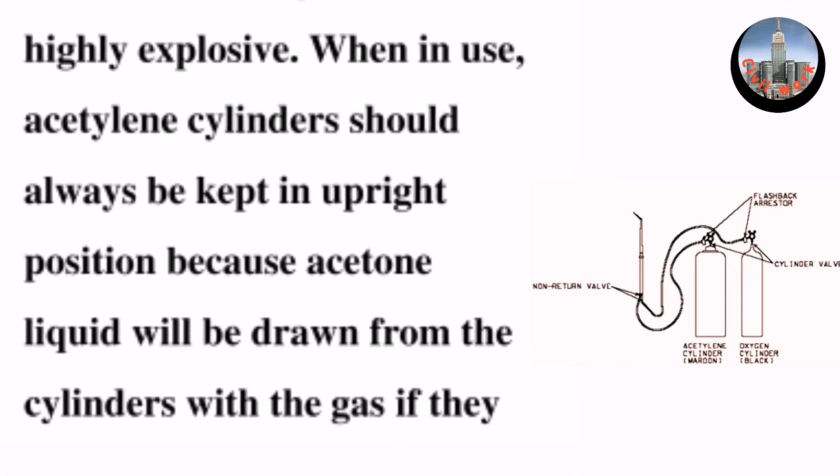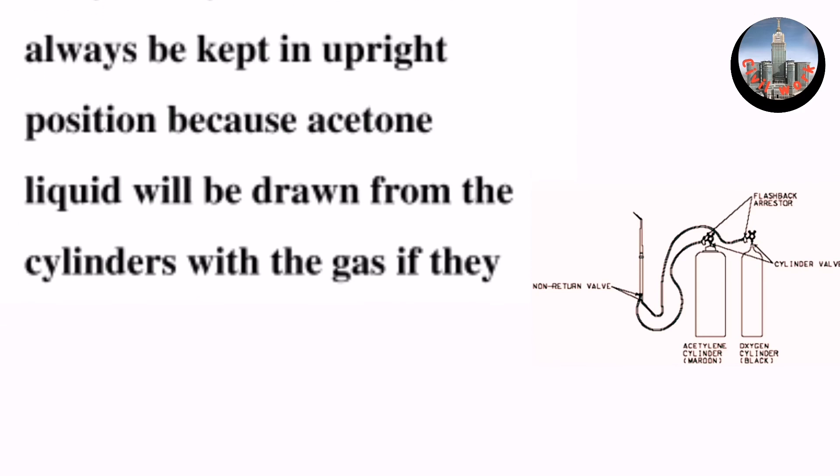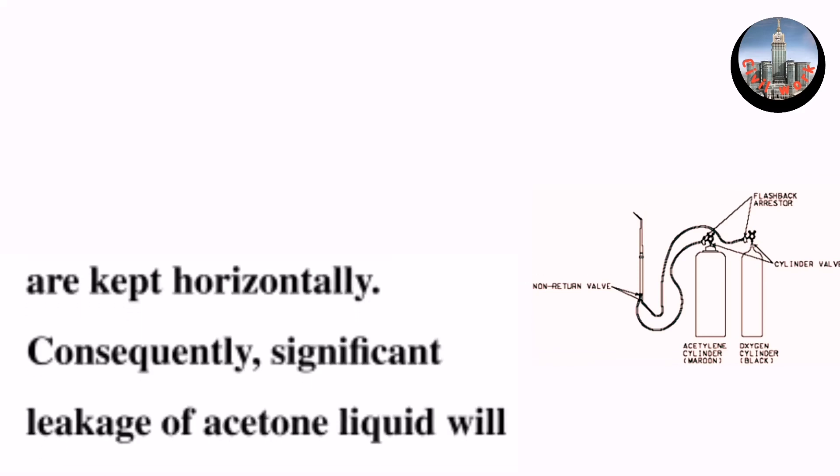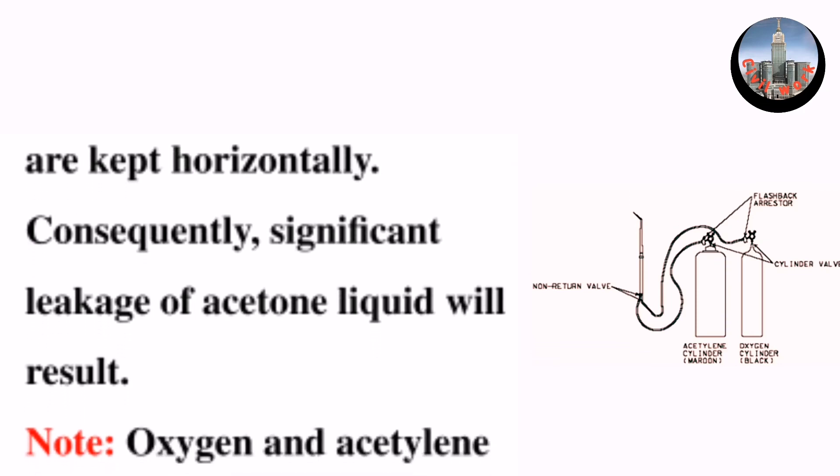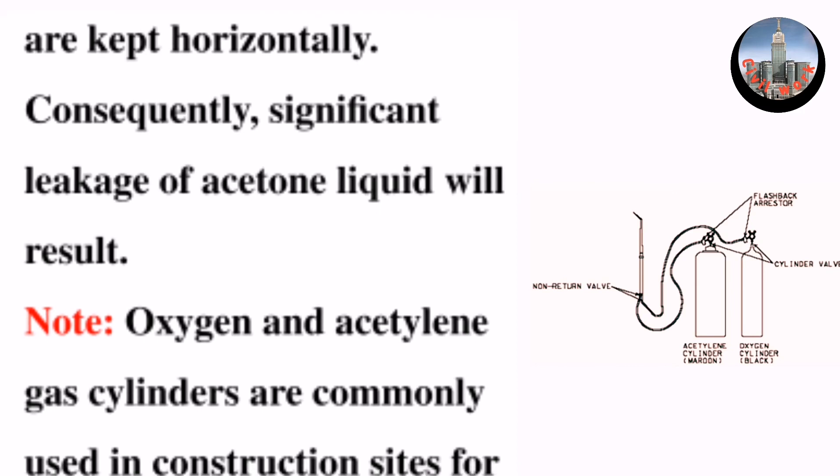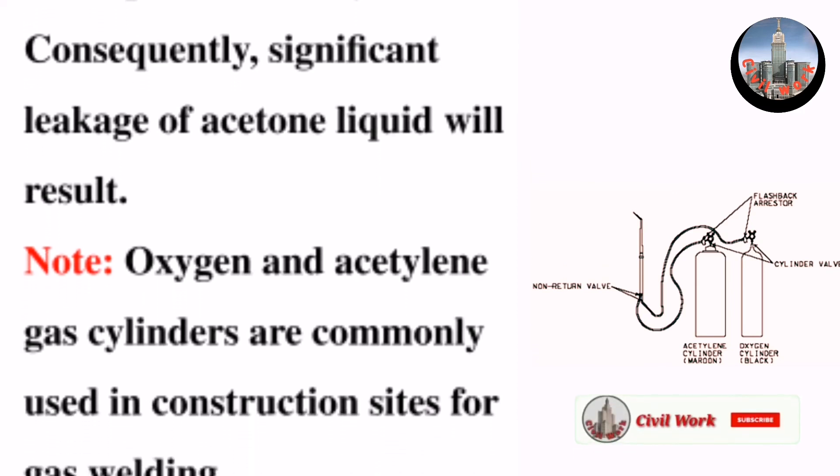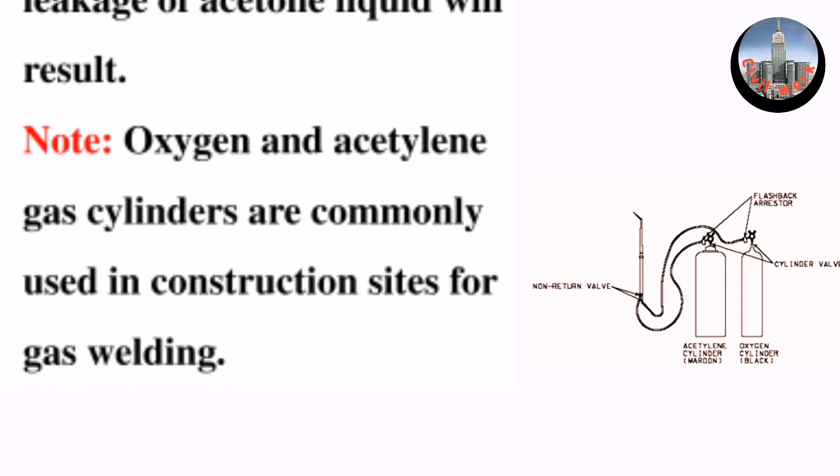Because acetone liquid will be drawn from the cylinders with the gas if they are kept horizontally. Consequently, significant leakage of acetone liquid will result. Note: oxygen and acetylene gas cylinders are commonly used in construction sites for gas welding.